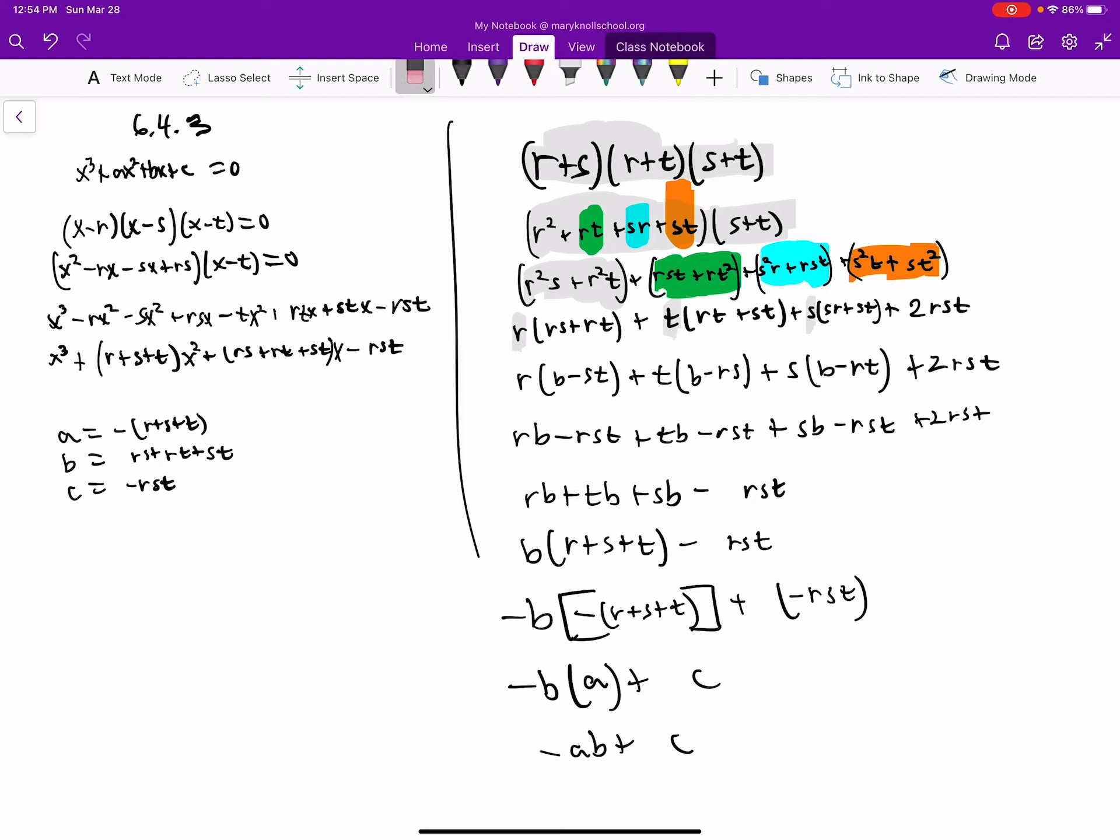So I went ahead and did that. Then I noticed that this right here, this r*s plus r*t, is going to be b minus s*t.